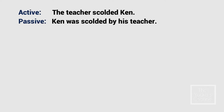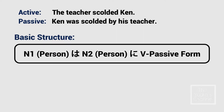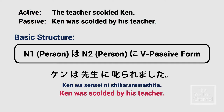Let's compare these two sentences. The active sentence 'the teacher scolded Ken' becomes 'Ken was scolded by his teacher' in passive voice. The basic structure is: N1 (person) wa, N2 (person) ni, verb in passive form. N1 is the subject marked by wa, and N2 is the agent or doer of the action marked by ni. Since the verb acts upon the subject, a transitive verb is used. For example: Ken wa sensei ni shikaraRemashita — Ken was scolded by his teacher.